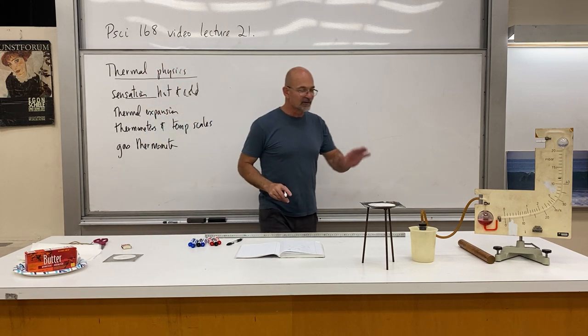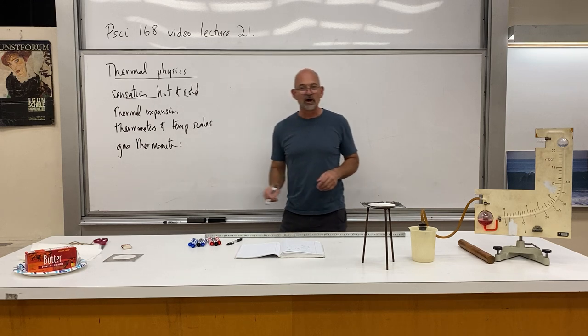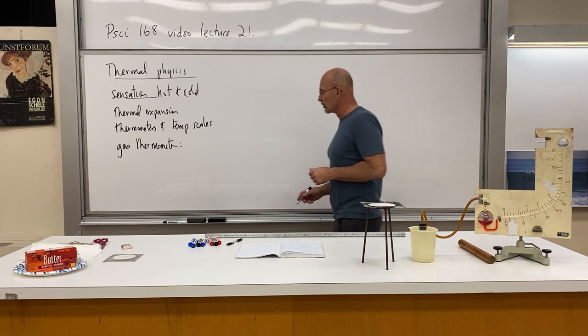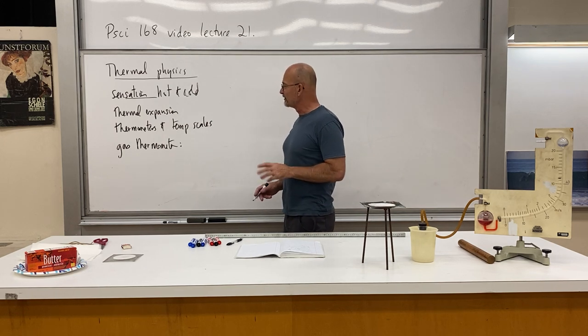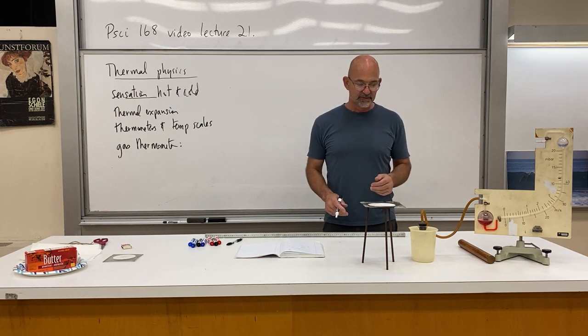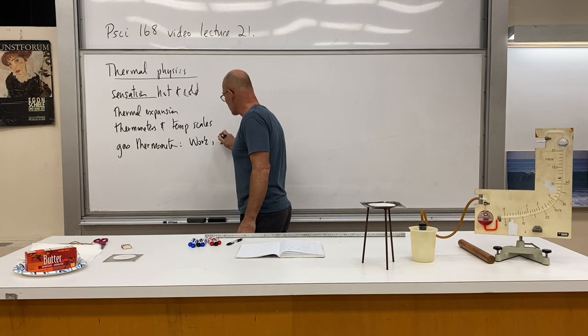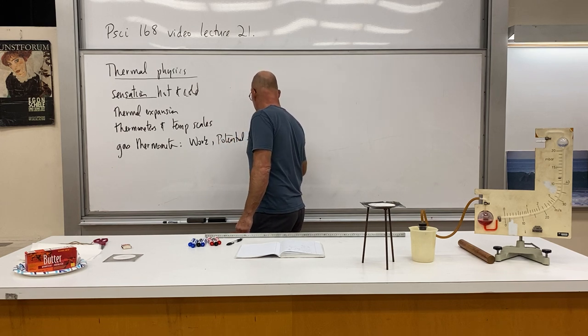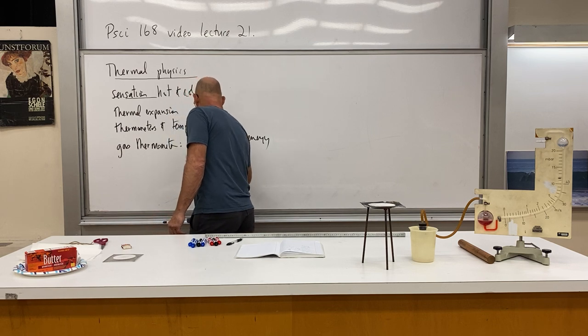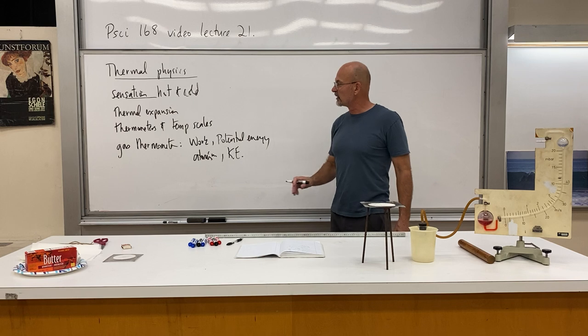The gas thermometer and the analysis showed us that we actually do have work going on. A byproduct of a thermal process can be work, and where there's work there's energy. Energy is the potential to do work. If you take into account that there are atoms and molecules, that's what a gas is composed of, then you can go even further. With the gas thermometer we have work, and from work we immediately have potential energy. Then if you take atomism into account you also have kinetic energy.